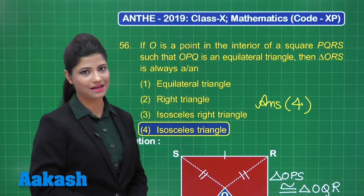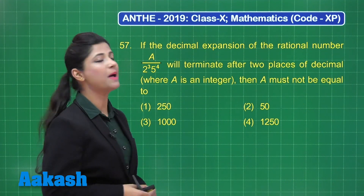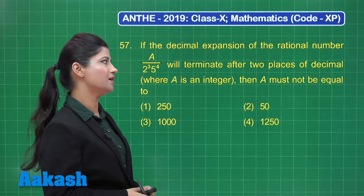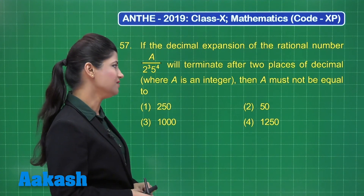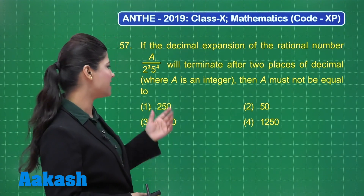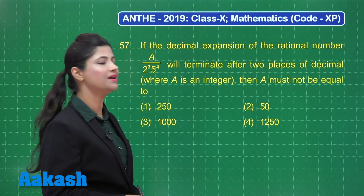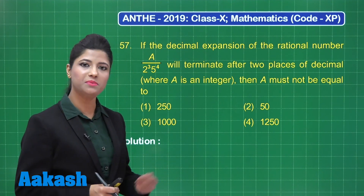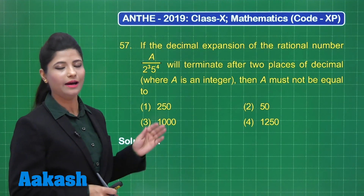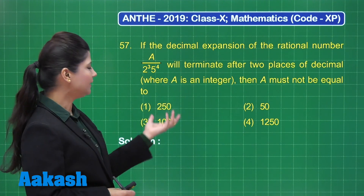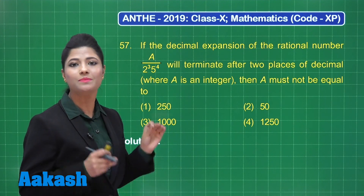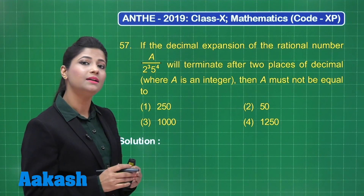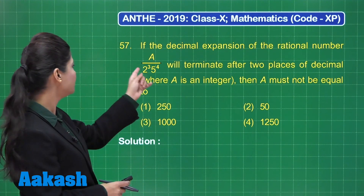Now let's take up question number 57. It states: if the decimal expansion of the rational number A/(2³ × 5⁴) terminates after two decimal places, where A is an integer, then A must NOT be equal to one of these options: 250, 50, 1000, or 1250. A rational number that is terminating may be an integer or terminate after some decimal places, determined by the powers of 2 and 5.